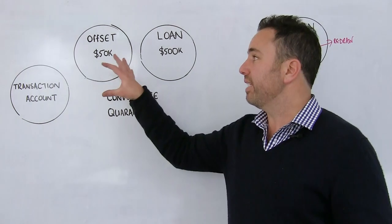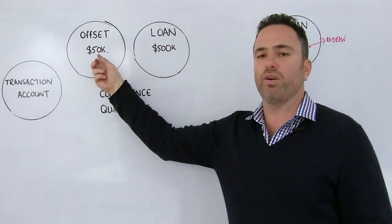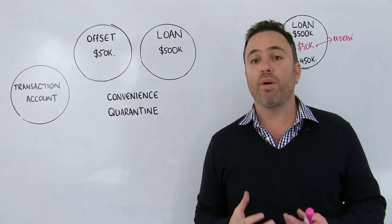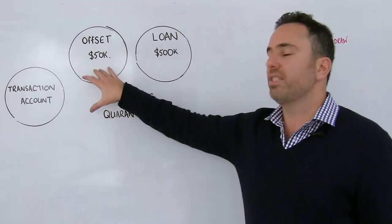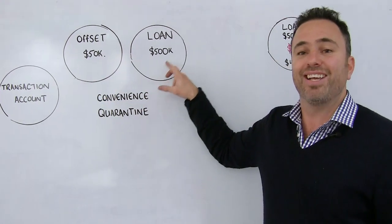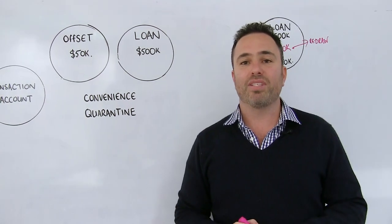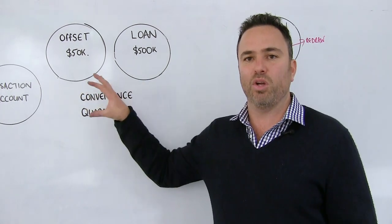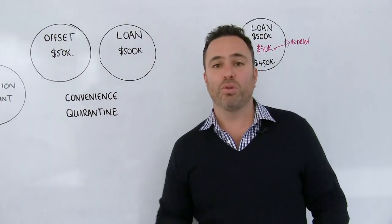So one of the things also to note is that the majority of loan facilities out there with an offset account mean you have to have a variable rate loan. However, through our wholesale funders, we've got one of the only products in the market that allows you to have an offset account actually attached to a fixed rate loan. So give us a buzz, 1-300-780-440, if you want to learn more about the correct way to set up a loan account and even past that, which one is going to be more suitable for you.